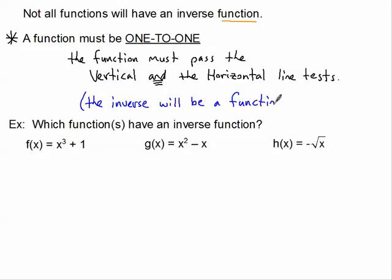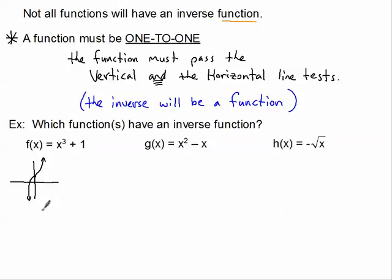I want to know if these equations are one-to-one. For f of x, graphically is probably the easiest way — you can plug these into your calculator, but this is just a basic cubic shifted up one, so it looks like a standard cubic. Passing a vertical line through it mentally, and passing a horizontal line through it mentally, it's not hitting more than one spot at a time. So yes, this is a one-to-one graph, and that means the inverse is a function.